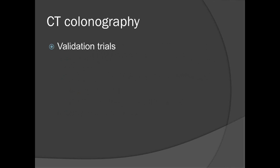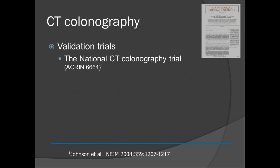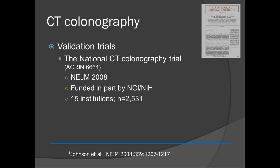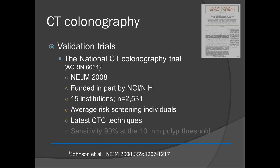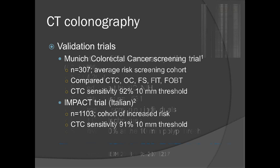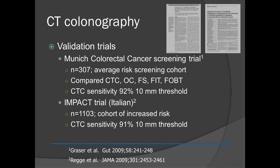The main validation study is the National CT Colonography Trial, the ACRIN 6664 protocol, published in the New England Journal in 2008, funded by NCI-NIH. It involved 15 institutions and over 2,500 average-risk screening individuals. It employed the latest CTC techniques and hit a sensitivity of 90% at the large polyp threshold of 10 millimeters. Other trials included a German trial and a multi-center Italian trial, all seeing very similar results in that 90% range. The general consensus is that you can certainly apply CTC to the screening cohort to detect colorectal polyps.